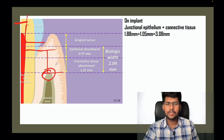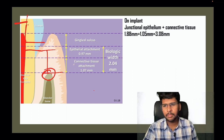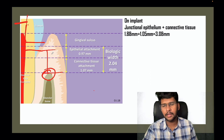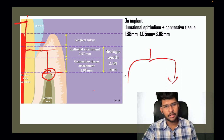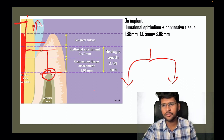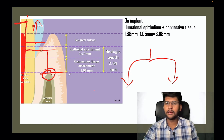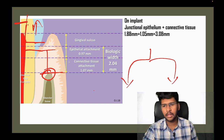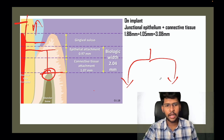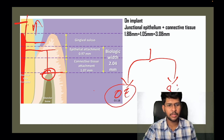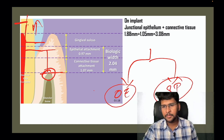When biologic width is violated, it leads to pathological destruction of bone and many other consequences. Two things can be done when biologic width cannot be maintained while restoring the tooth: first, orthodontic extrusion of the tooth so that enough space is created from the base of the proximal box to the crest of the interdental alveolar bone, though this is a long-term process.